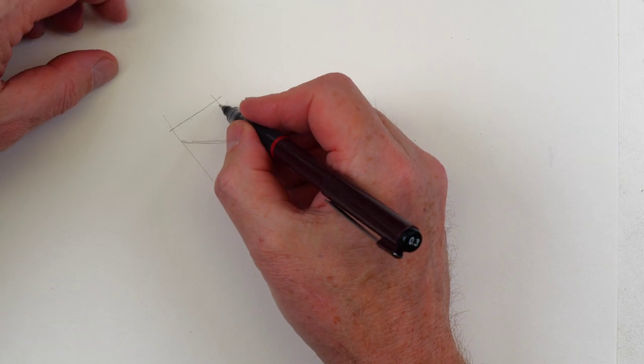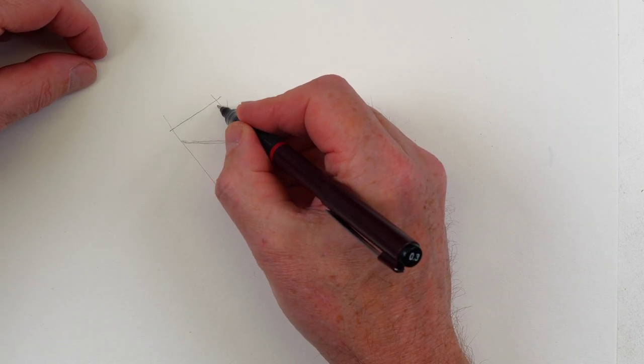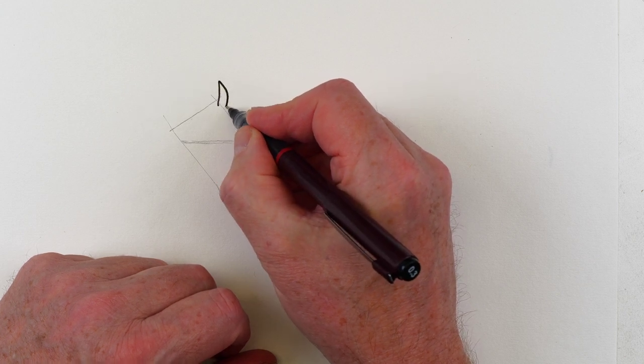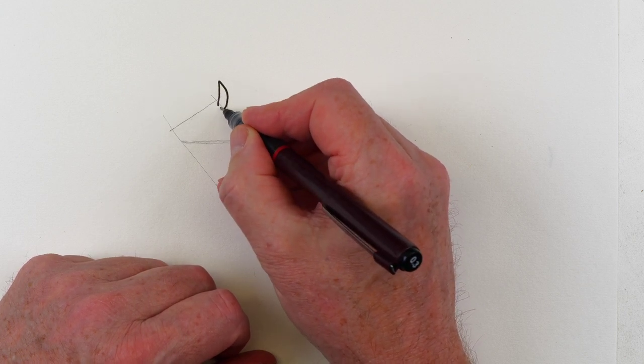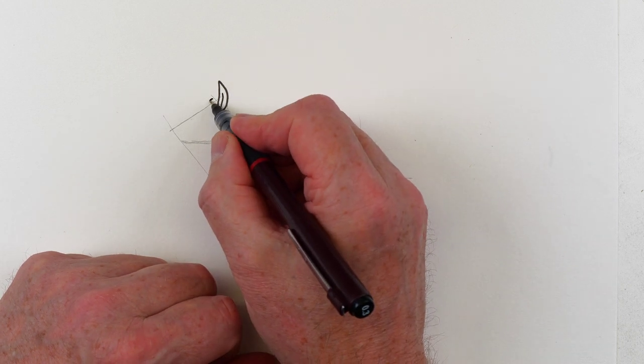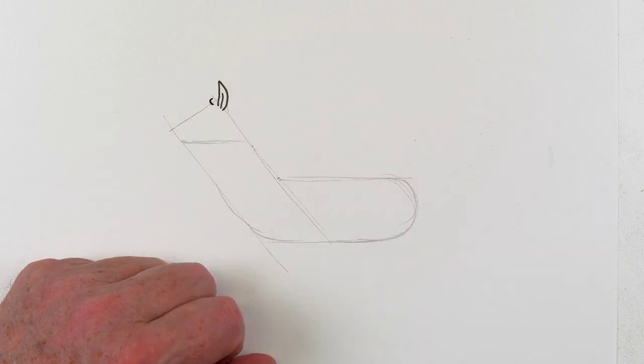So this is going to be the head. I'm going to start pretty much on that kind of intersection there and draw an ear. So it's up and around and a flick up the middle. And then this is going to be the bud of the antler.